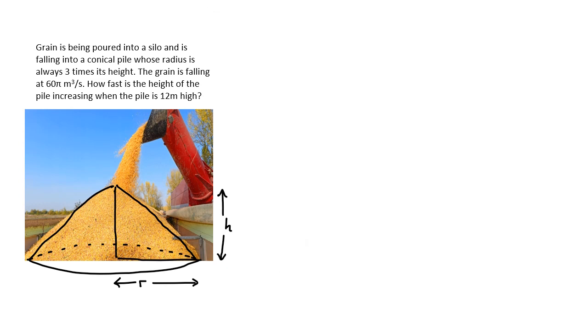This being a related rates problem, we must ask ourselves what kind of information we can gather from the text of the problem. Like how this thing's radius is always three times its height. That's something we can write down mathematically. The radius is always three times the height, r equals 3h.